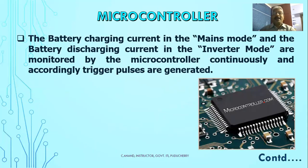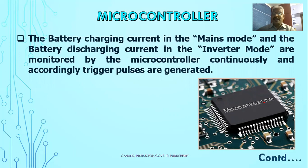The battery charging current in mains mode and the battery discharging current in inverter mode are monitored by the microcontroller. In mains mode, the battery charges; in inverter mode, the battery discharges. This is continuously monitored by the microcontroller.